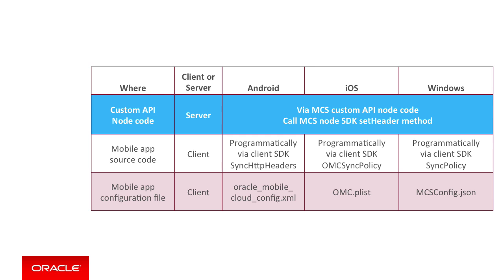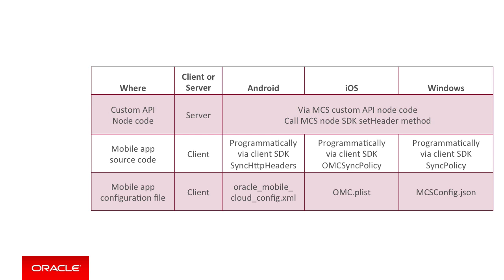For a custom API to set these headers on the sync policies, you do this through the MCS service-side SDK in Node, where you set specific headers in the response that the client-side data offline sync libraries will adhere to. If you specify sync policies in all locations — the client config file, the mobile app code itself, and the server side — the precedence is: server-side policies win, then programmatic policies, then the config files.